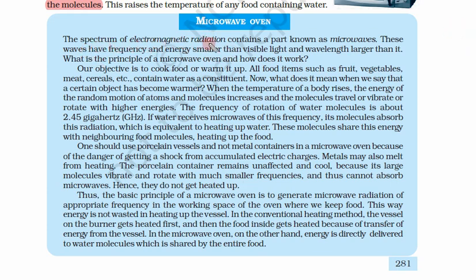The spectrum of electromagnetic radiation contains a part known as microwaves. These waves have frequency and energy smaller than visible light — both frequency and energy are proportional and smaller than that of visible light — and their wavelength is larger than visible light.